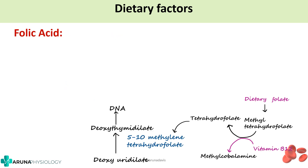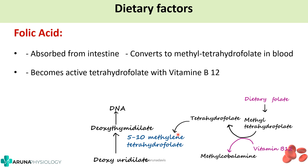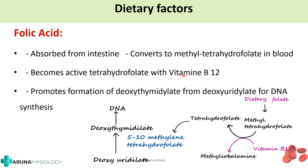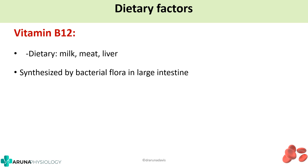Folic acid obtained from the diet is absorbed from the intestine and converted to methyl tetrahydrofolate, then converted to active tetrahydrofolate with the help of vitamin B12. This promotes the formation of deoxythymidylate from deoxyuridylate for DNA synthesis. That is the role of folic acid in erythropoiesis. Vitamin B12 is obtained from diet in the form of milk, meat or liver, and is also synthesized by bacterial flora in the large intestine. It requires the intrinsic factor from stomach parietal cells.